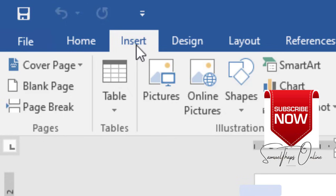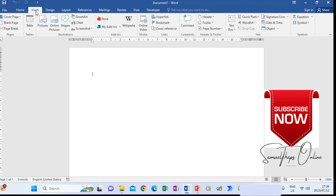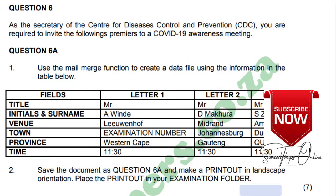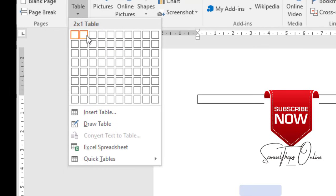Looking at the question paper again, we have Title, Initials, Surname, Venue, Town, Province, and Time. So Title will be our first column heading, Initials the second, then Surname, then Venue, then Town, then Province as our fifth, and Time as our sixth. All in all we are going to have six columns as we create the data source.